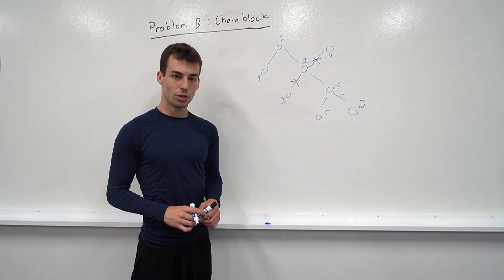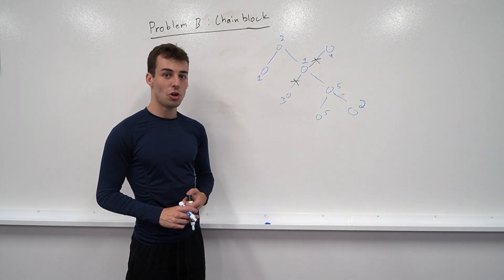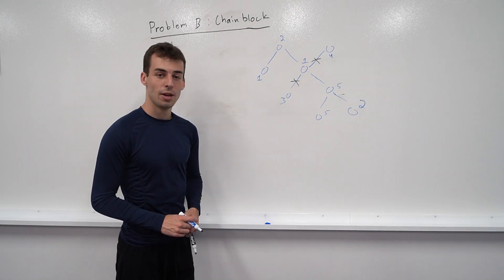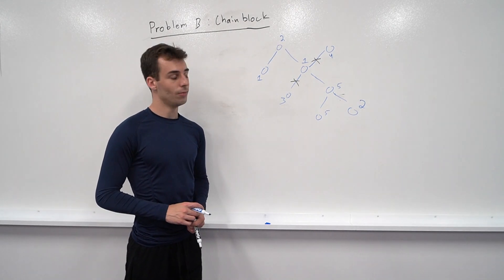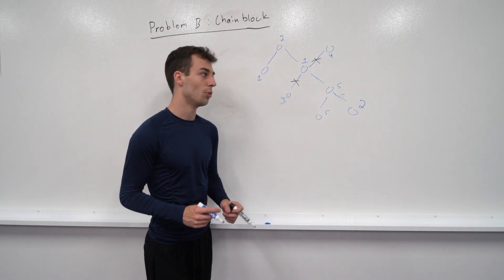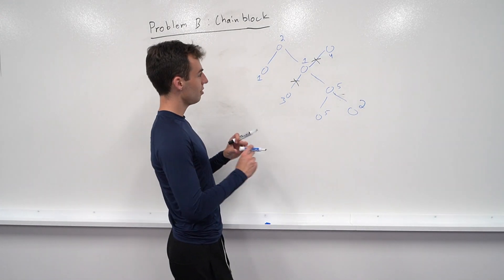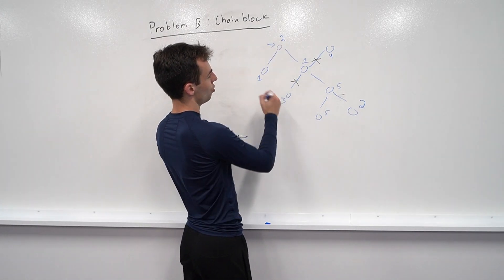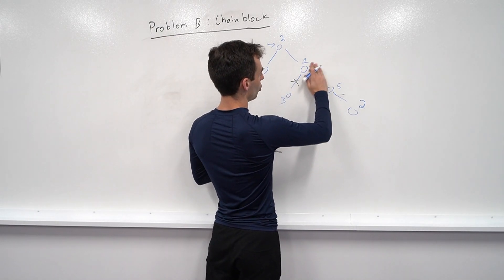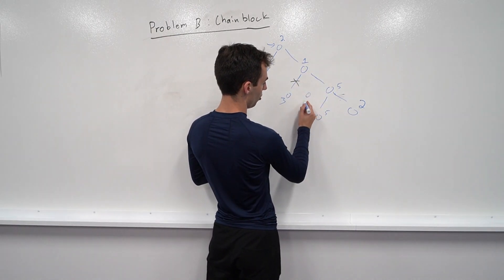All right, so how do we solve this problem? As with a lot of tree problems, we'll start by arbitrarily rooting the tree. So I chose to root the tree from node 1, but you can choose any node you want. And then to make this picture a little simpler, we'll choose the root as this node. And then all we have to do to make it look like a rooted tree is move this node here.